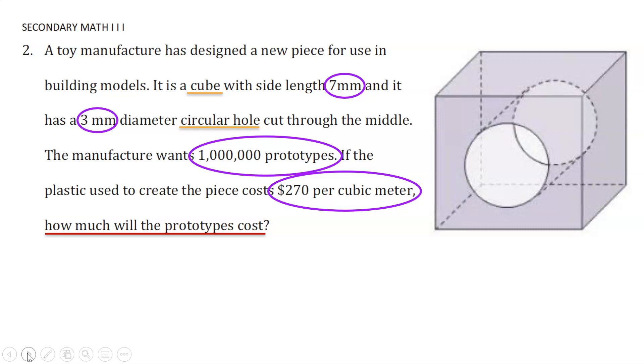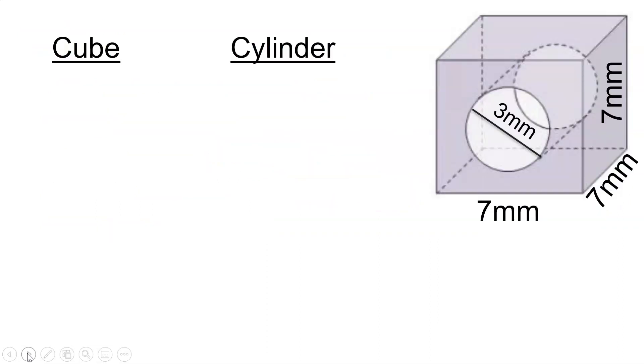We also need to pay attention to the units. The measurements are in millimeters, but the cost is given in cubic meters. Let's start by finding the volume of one of these toy pieces. The piece is created by subtracting the cylinder volume from the cube's volume.